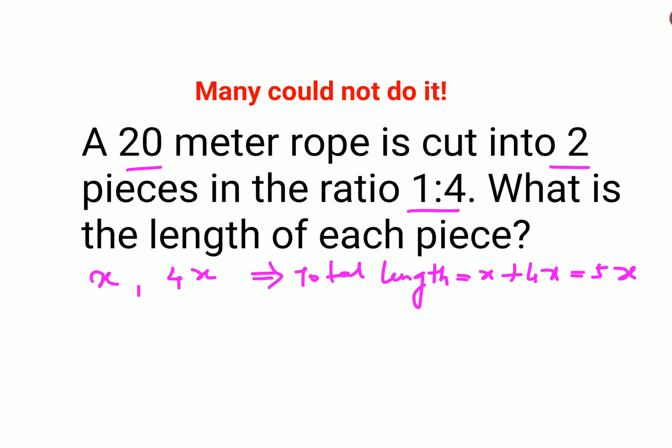So basically we want to find the first piece. So first piece can be written as x upon 5x into, what is the total length of the rope, that is 20.